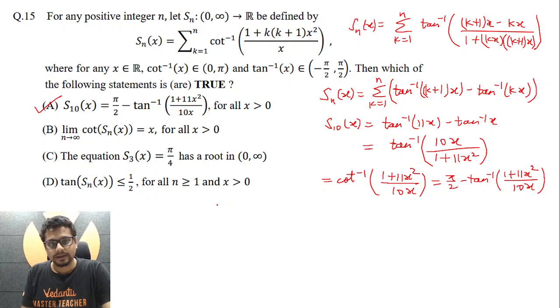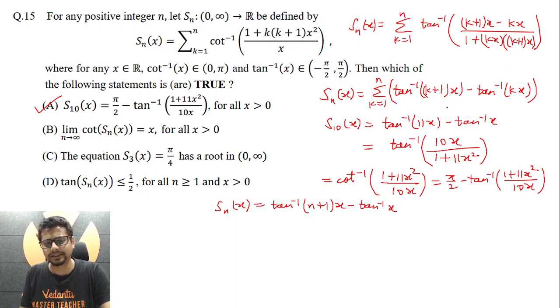So here, S_n(x) essentially turns out to be, if you see carefully, S_n(x) will turn out to be, as you do the summation from k equal to 1 to n, you would essentially get tan inverse (n+1)x minus tan inverse x. It's a telescopic series, very easy to comment upon.